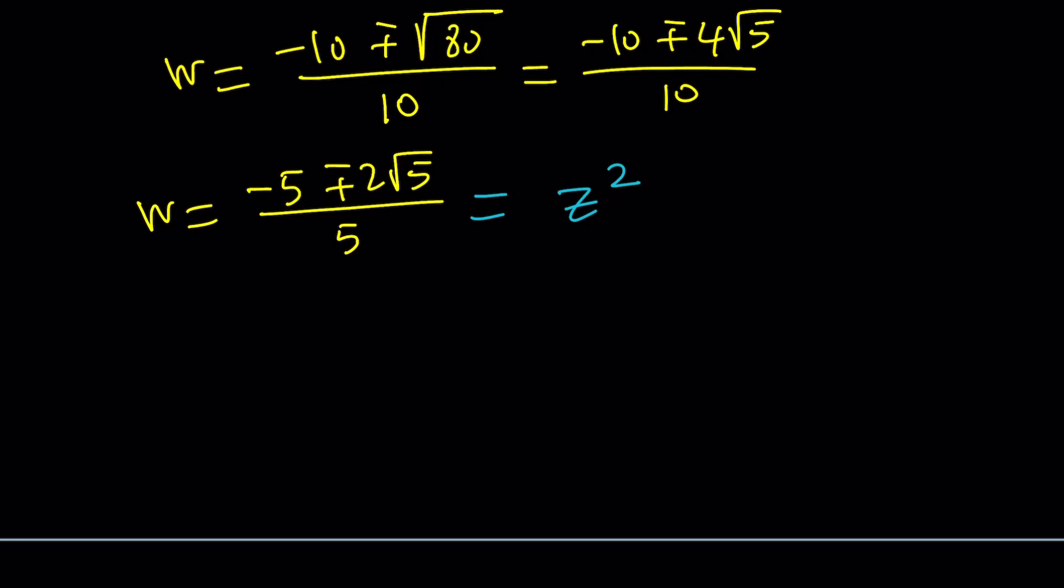But remember, a complex number has two square roots. Therefore, this is going to bring in four roots. And it's a quartic, so that's normal, right? The fundamental theorem says you should have four complex solutions.